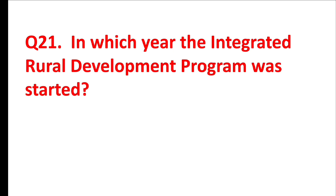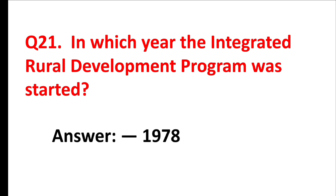In which year was the Integrated Rural Development Program started? Answer is: 1978.